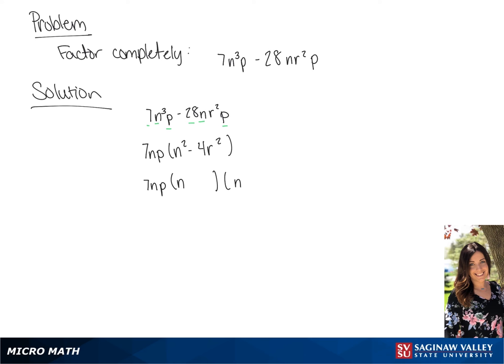We know that the square root of n squared is n, and the square root of 4r squared is going to be 2r. So fully factored we have 7np times n minus 2r times n plus 2r.